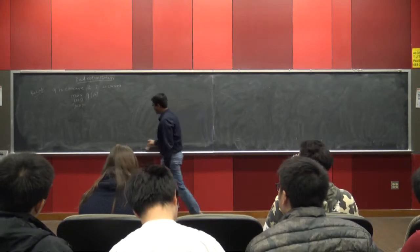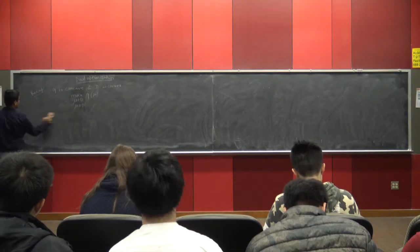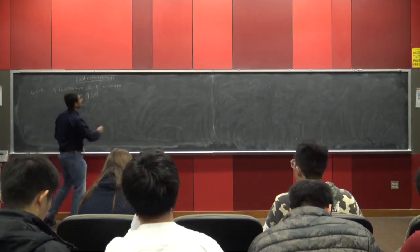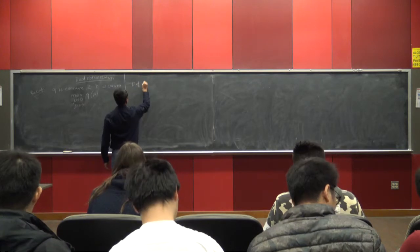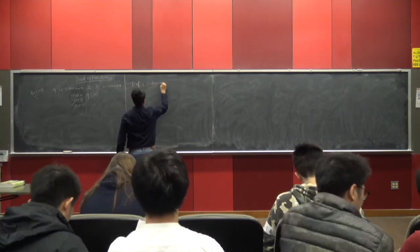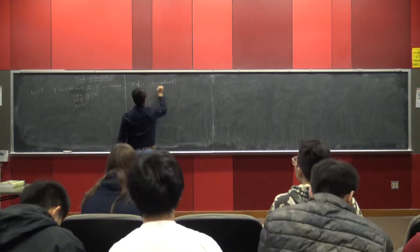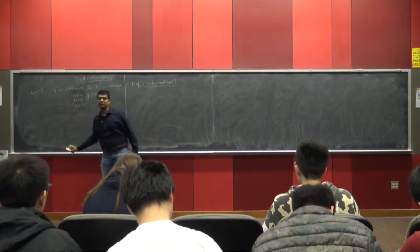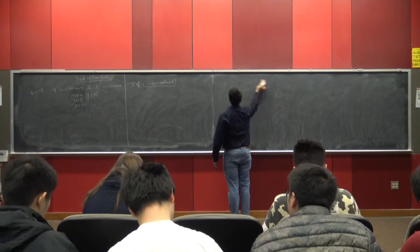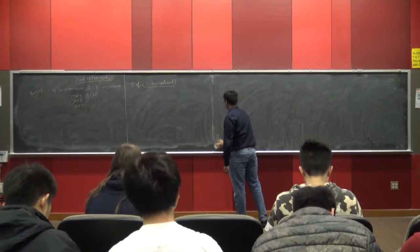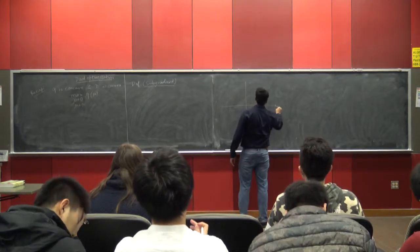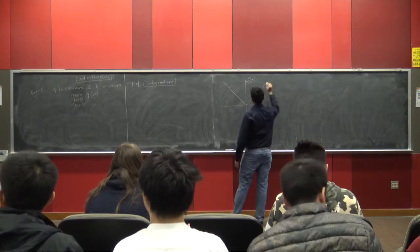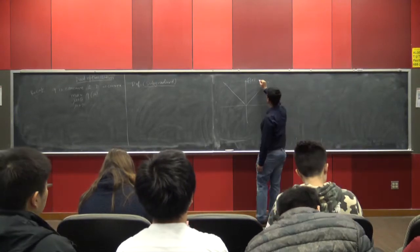I want to introduce in class today subgradient methods, which are slightly different from gradient methods. What is a subgradient? Let us first look at the picture of a convex function that is not differentiable. Let us start with a very simple convex function: this is my X, this is my F(X), and this is my convex function F(X) equals absolute value of X.